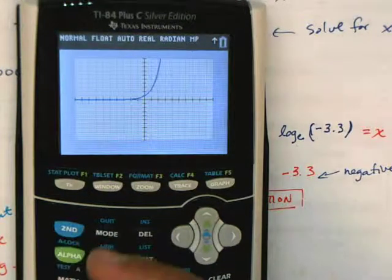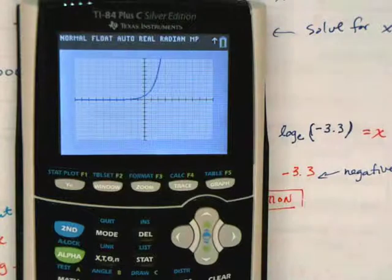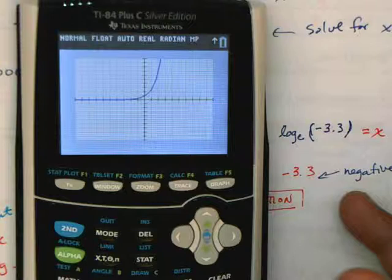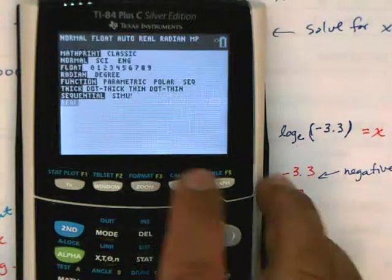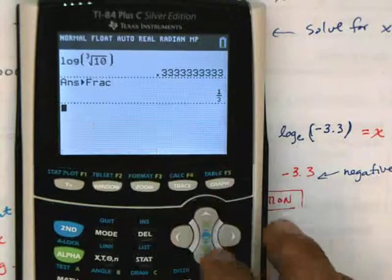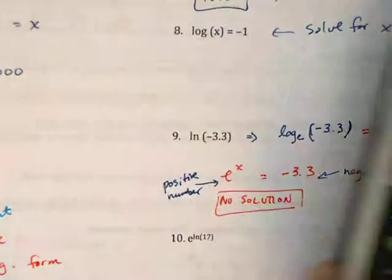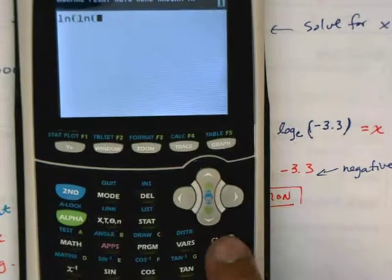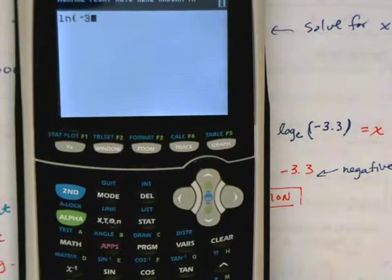In fact, e to the x has an asymptote at zero, and that's because you can't multiply a number repeatedly and get a negative answer because the number itself is positive. Whenever you have natural log you can always check your answer. You can see natural log of negative 3.3 gives an error.